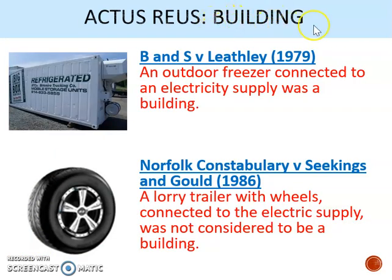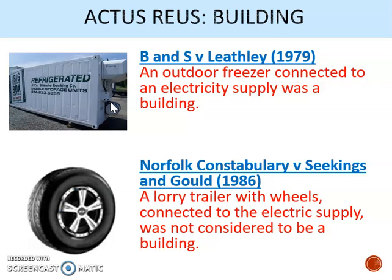The second actus reus requirement is entry of a building or part of a building. The courts have had to consider what amounts to a building. There's no statutory definition, although Section 9(4) states that inhabited vehicles and vessels are included, even if they're not inhabited at the time of the offence. In B&S v Lethley, a lorry container resting on sleepers was being used as refrigerated storage. It was connected to the electricity supply and had been in the same place for two to three years. It was held that this outdoor freezer was a building for the purposes of the Theft Act, and therefore it was possible to burgle it.